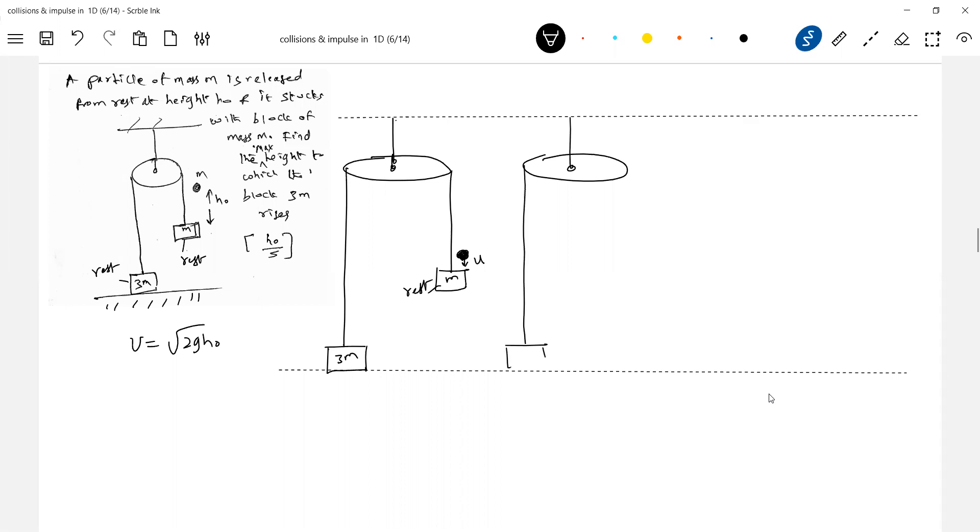Then what will happen here? There will be normal impulse set up between the particle and the block. When the particle comes and collides with the block, a normal contact force will act. Because of that, the block M will start moving down. Suddenly, the string is jerked and an impulse, a sudden increase in tension, is set up.